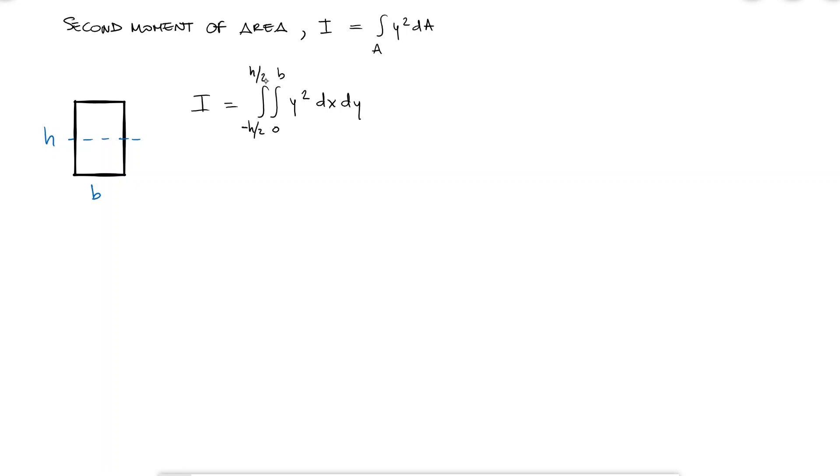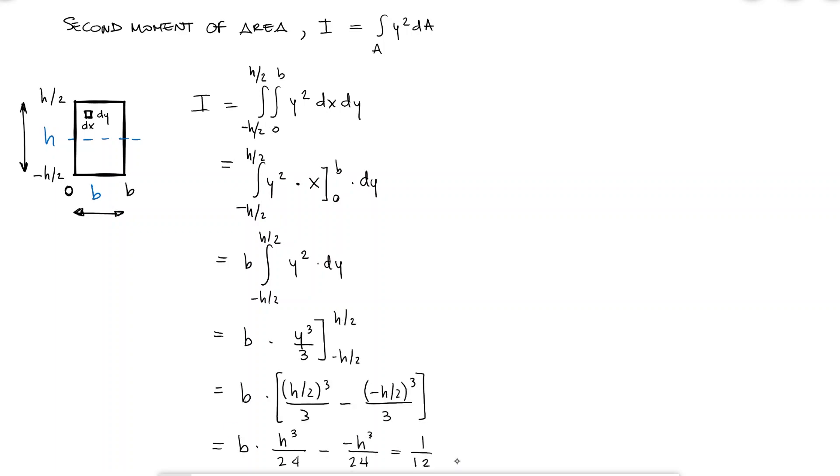Notice that all I'm doing here is rewriting the infinitesimal area dA as dx times dy and using integration limits that will cover the whole area. The integral of dx is x evaluated between 0 and b, which is just a constant b outside of the integral. The integral of y squared is y cubed over 3 evaluated between minus h over 2 and h over 2. This yields 1 over 12 times b times h cubed.